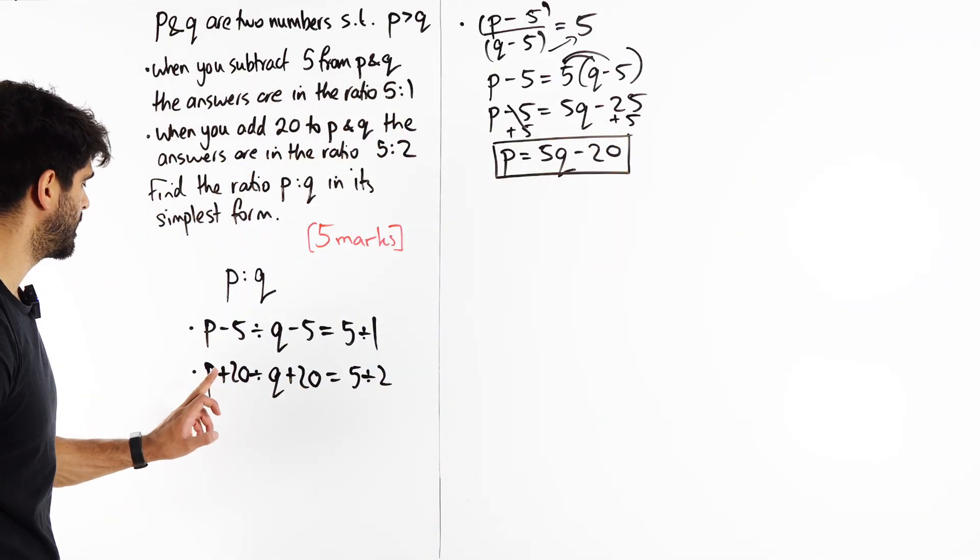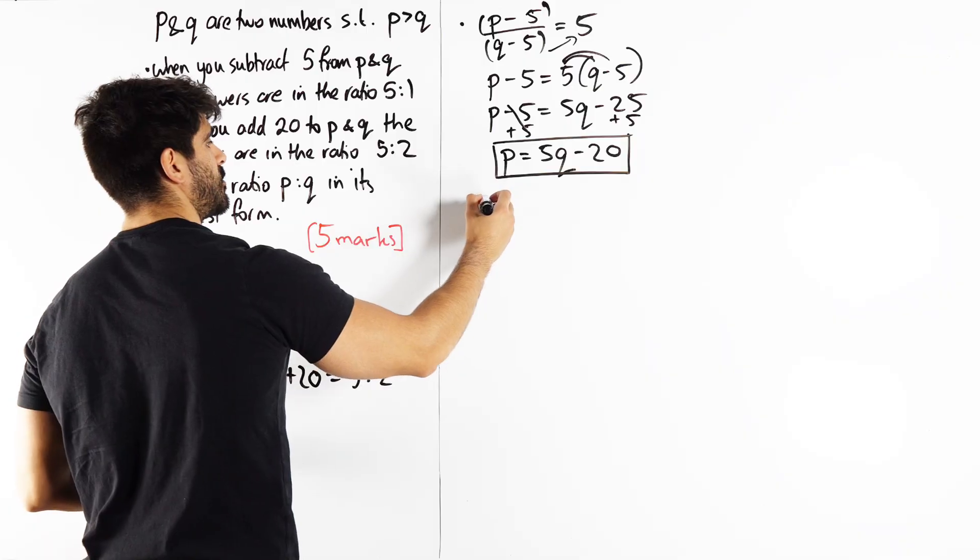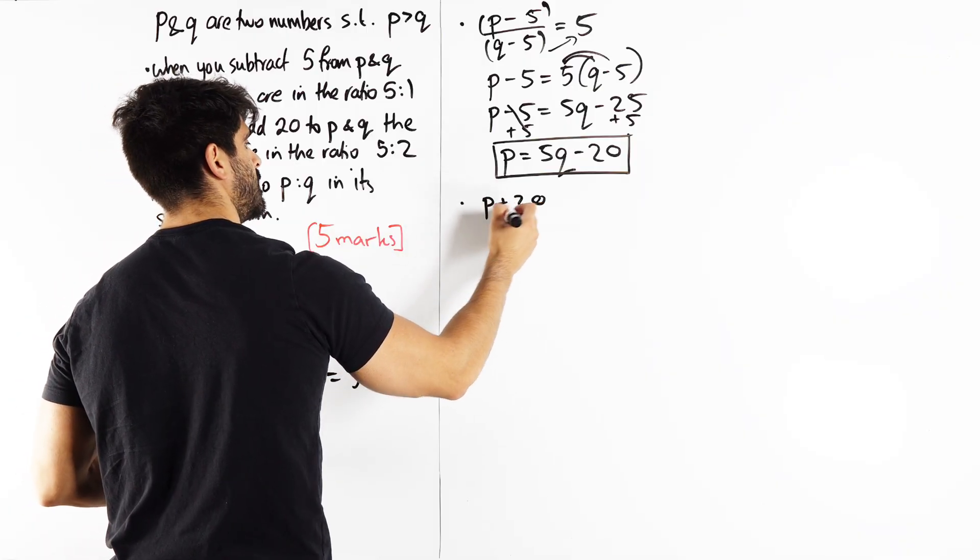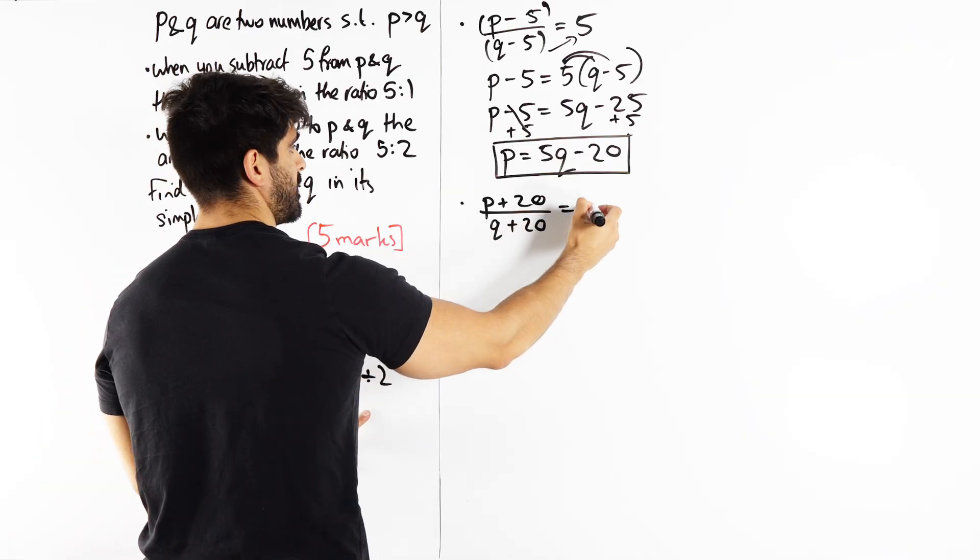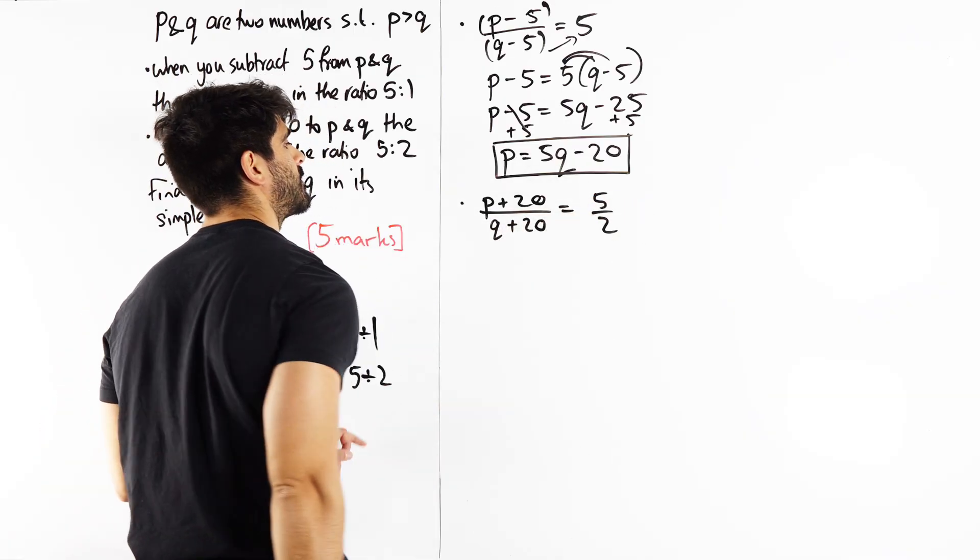For the second one, doing the same thing, P plus 20 over Q plus 20 is 5 divided by 2.